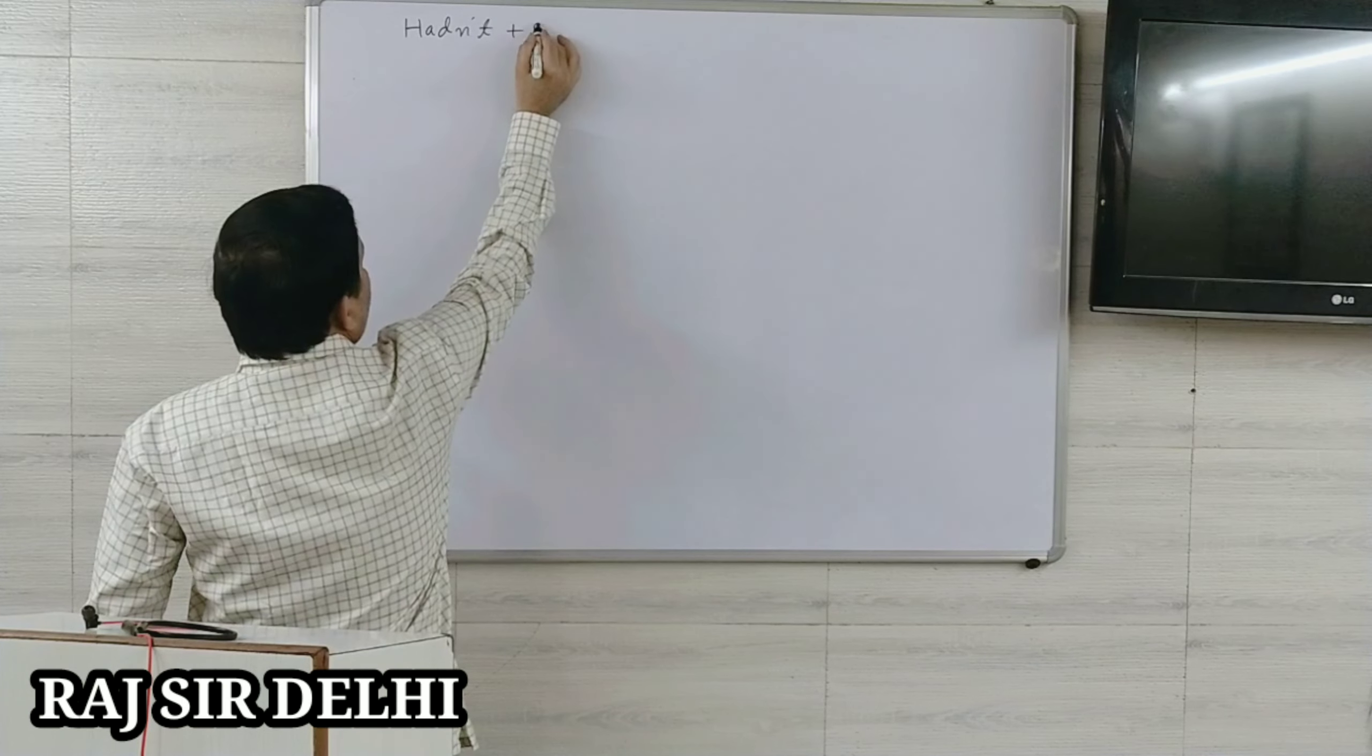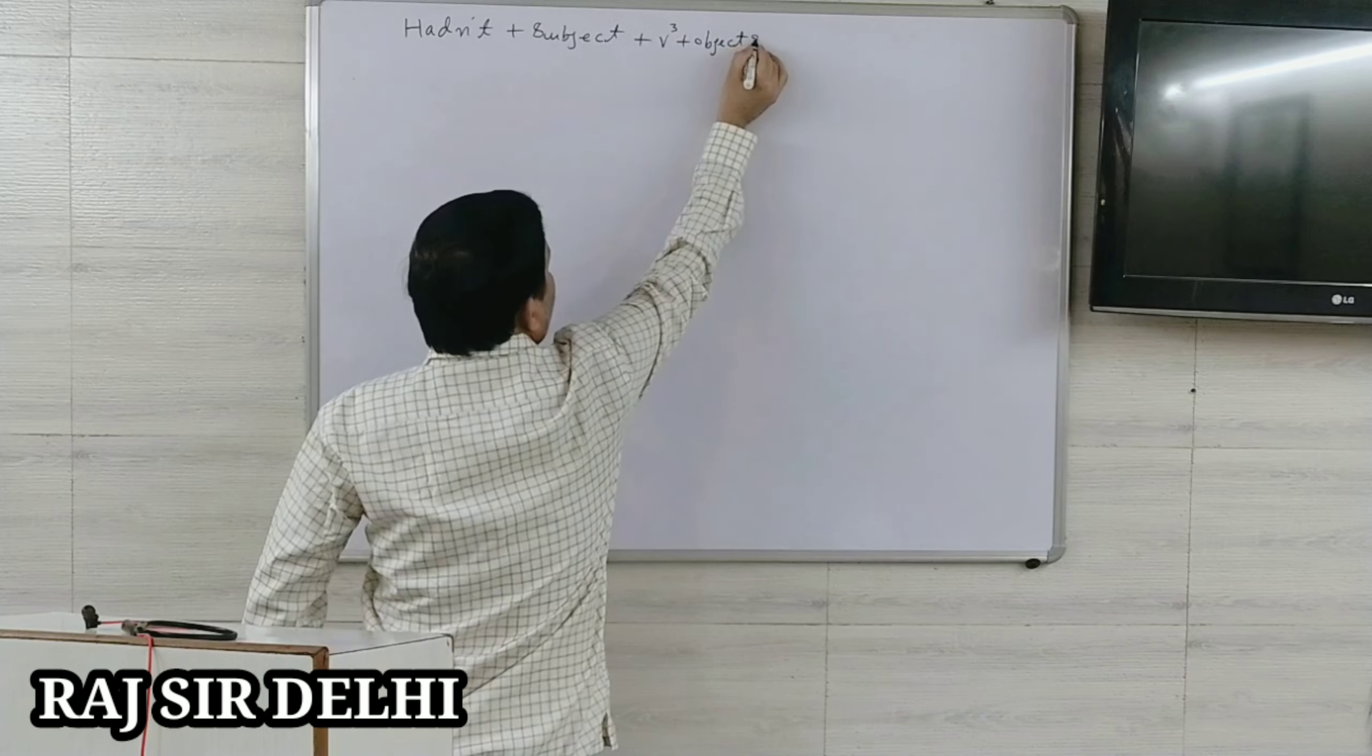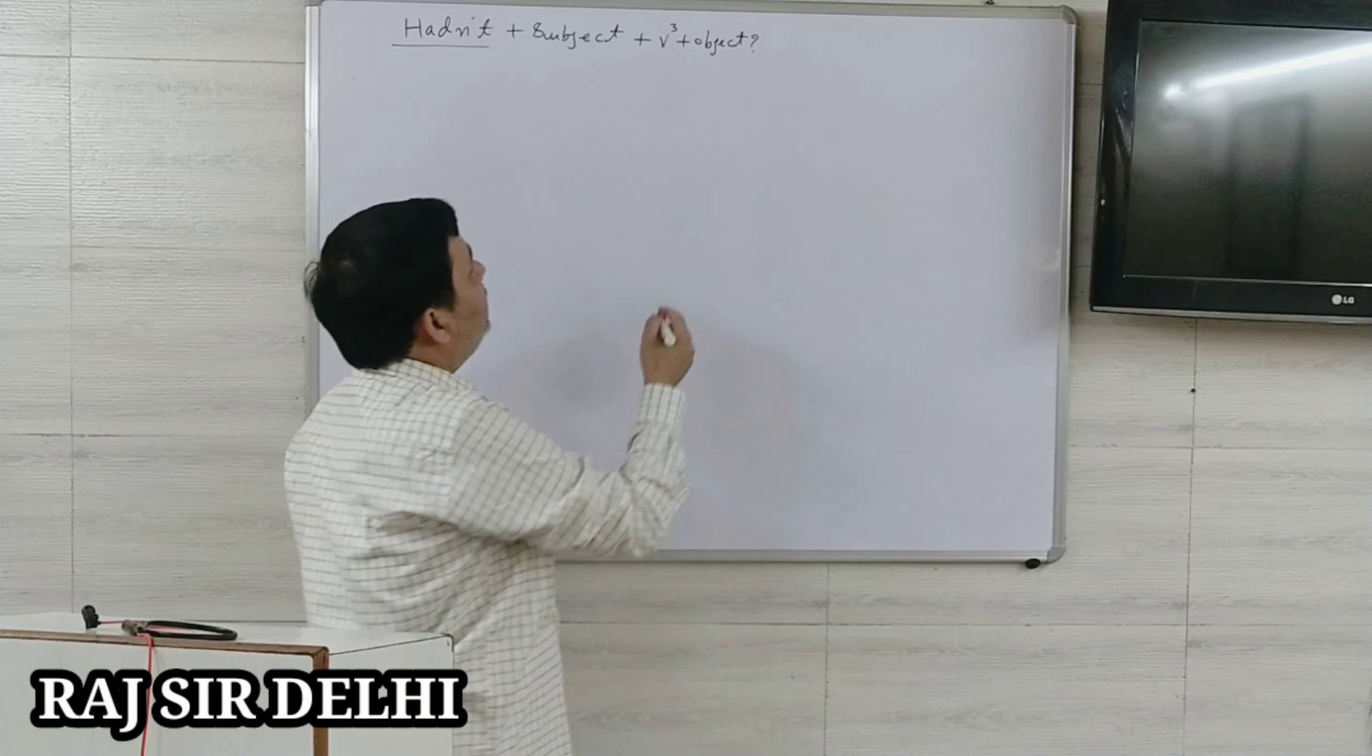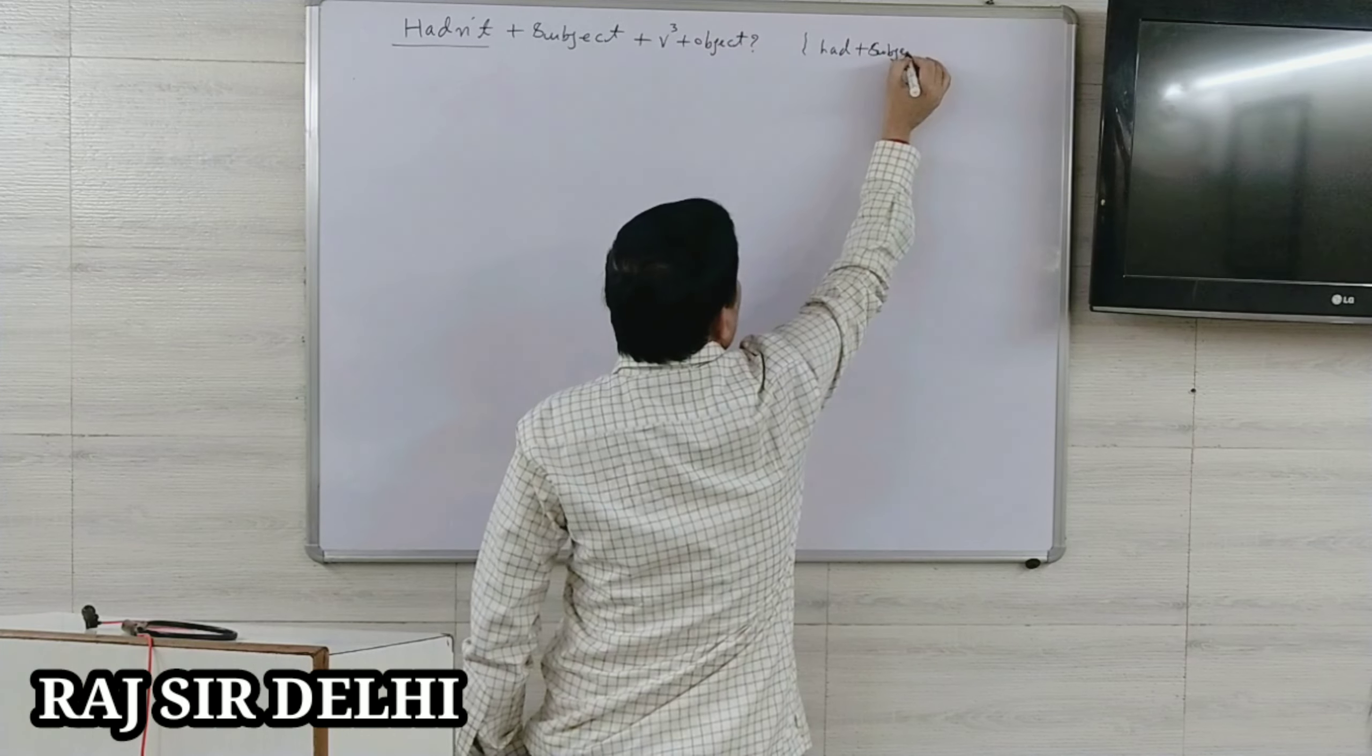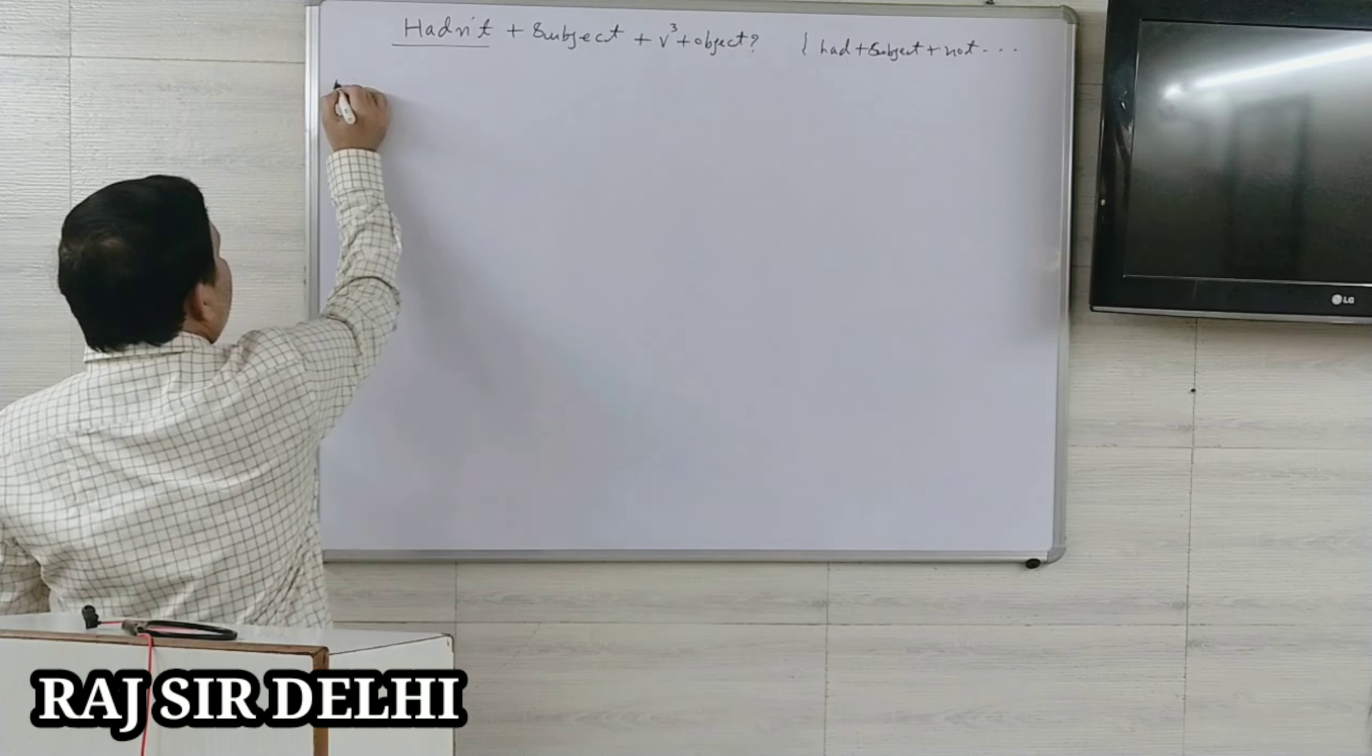So here students, what is the formula of past perfect in interrogative negative sentence? Hadn't plus subject plus verb third form plus object. At the last we have to put the question mark. If you don't want to write hadn't, dear students, you can write had plus subject plus not.